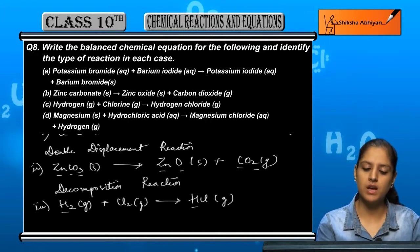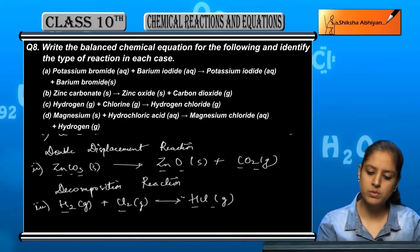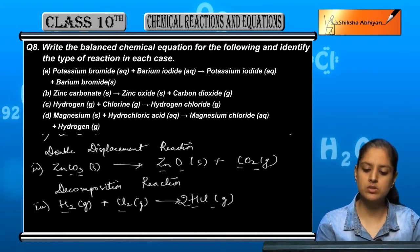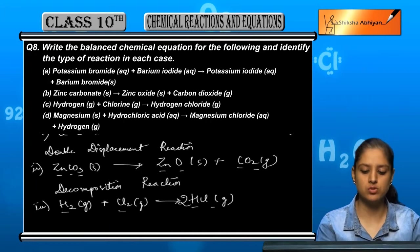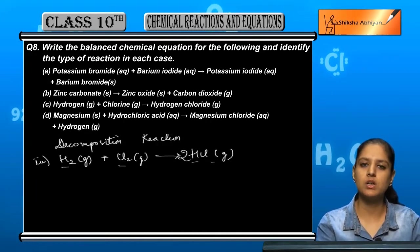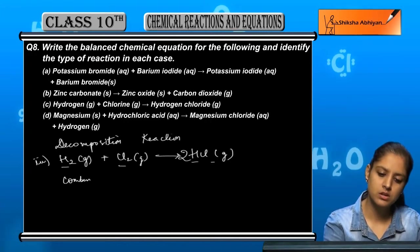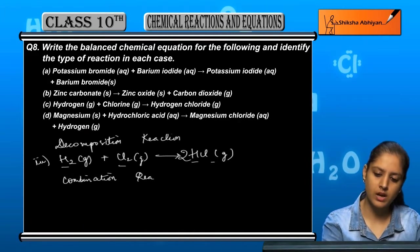Now, H2 here is 2 and here is 1. Cl here is 2 and here is 1. So if we multiply this by 2, then all will be balanced. So this is a combination reaction.